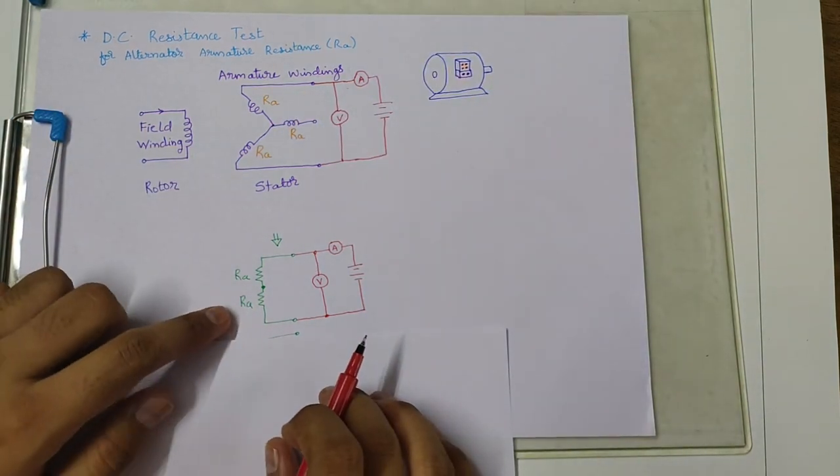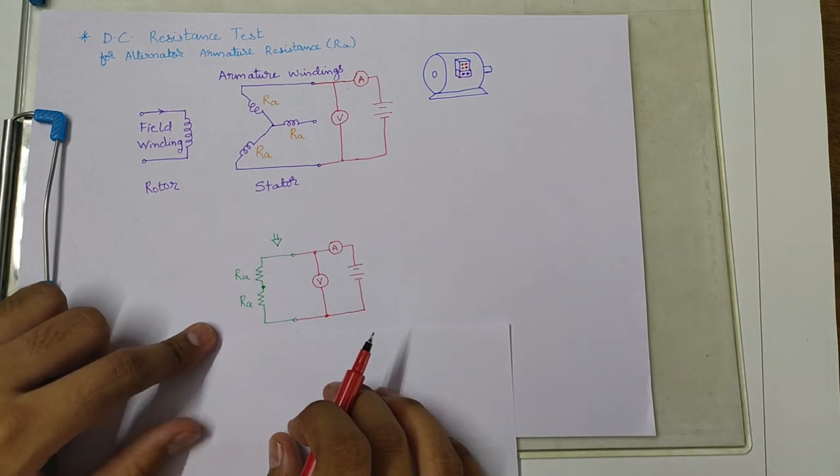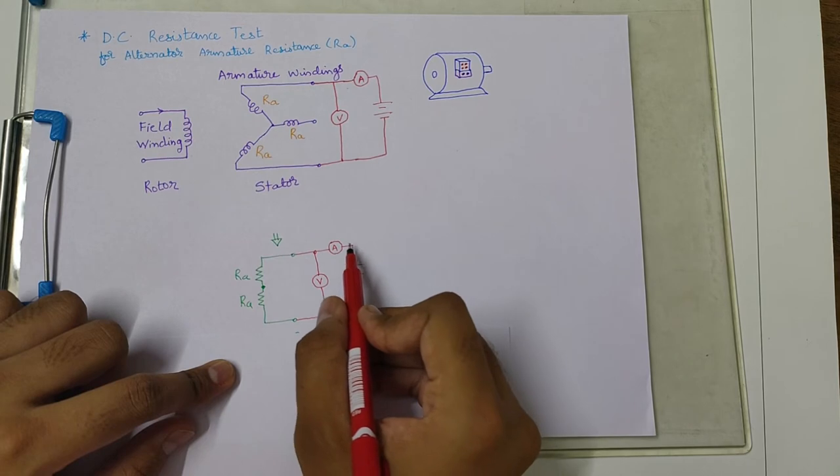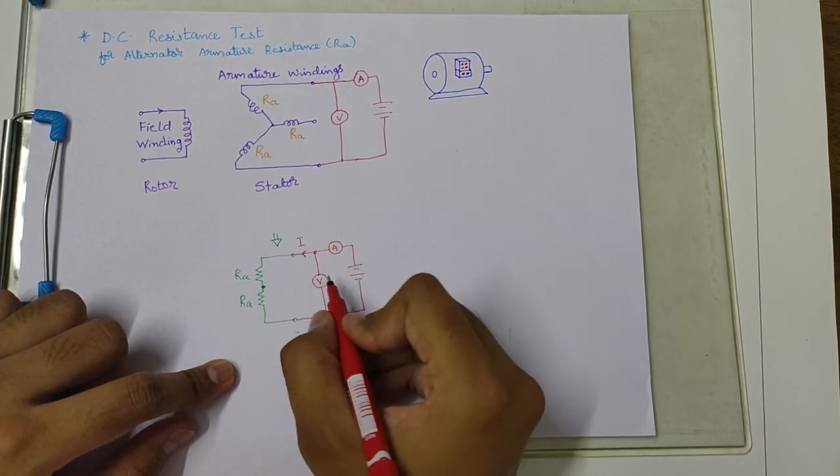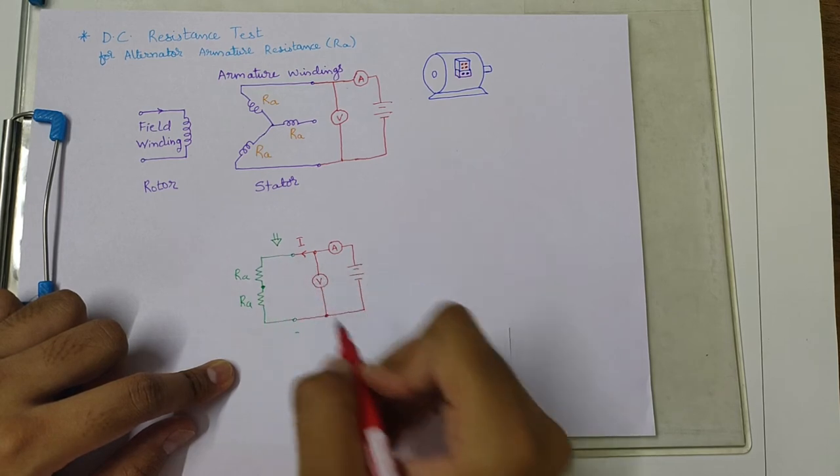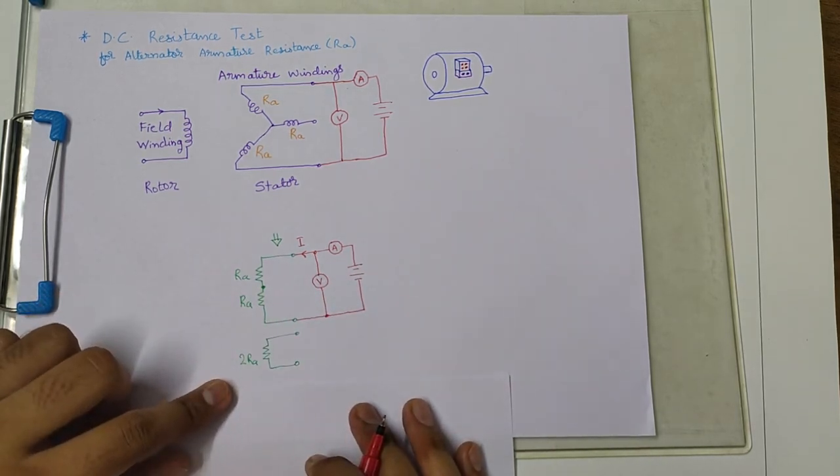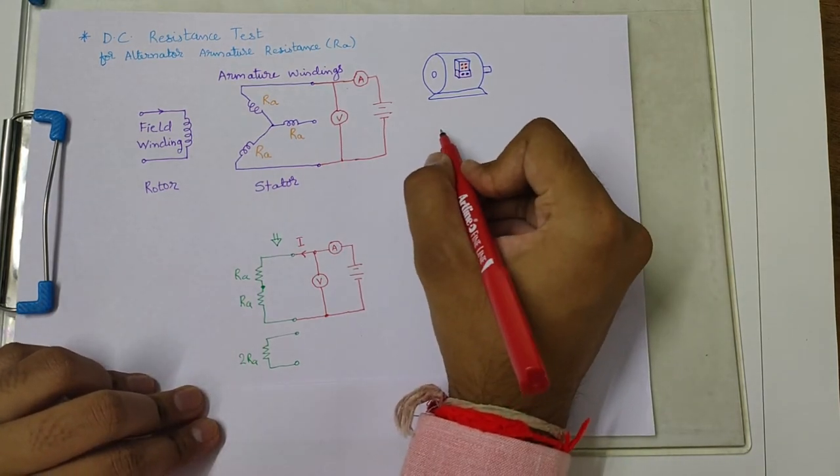So we can represent it by two resistances in series with each other. Now as you can see in the circuit, the supply will be providing current I, so we can measure this current I and the voltage provided by the supply across these two resistances. So the resistance measured by this method will be 2RA.